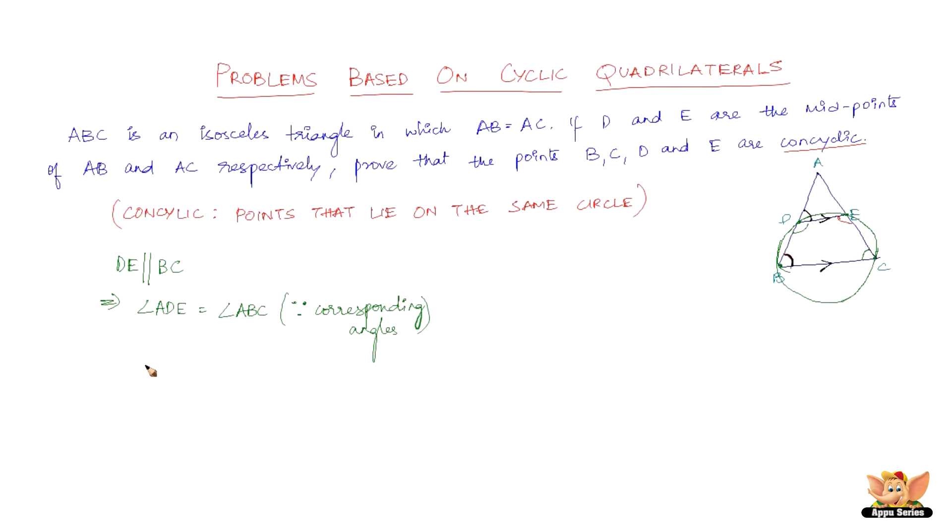The next point to consider is, since angle ADE equals angle ABC, we also have angle ADE equal to angle ACB. Because this is an isosceles triangle, angle ABC equals angle ACB. So when angle ADE equals angle ABC, angle ADE also equals angle ACB.